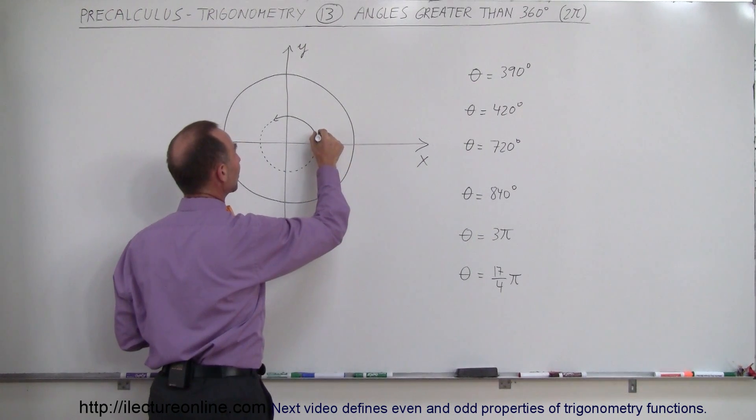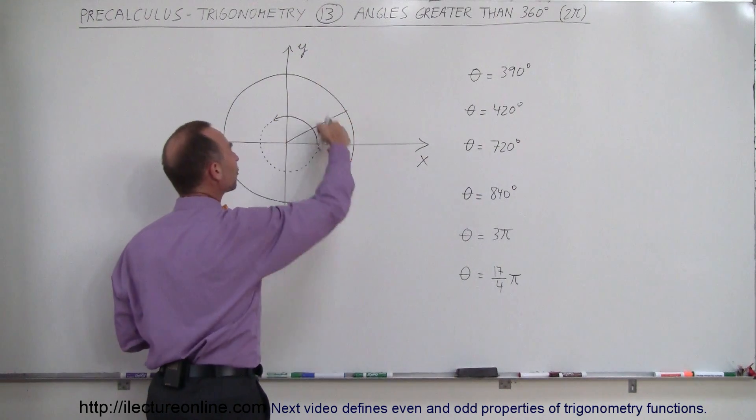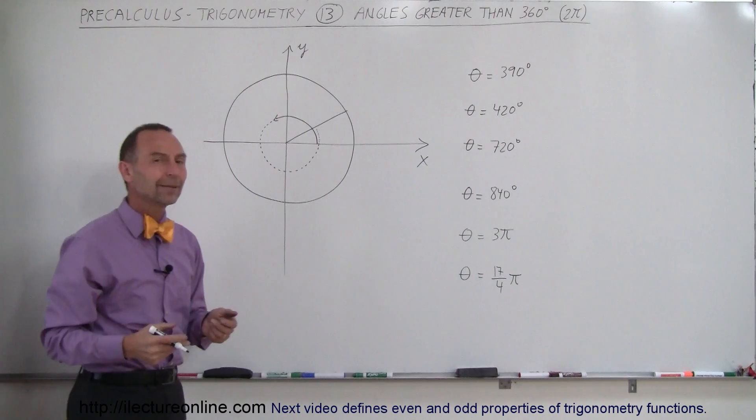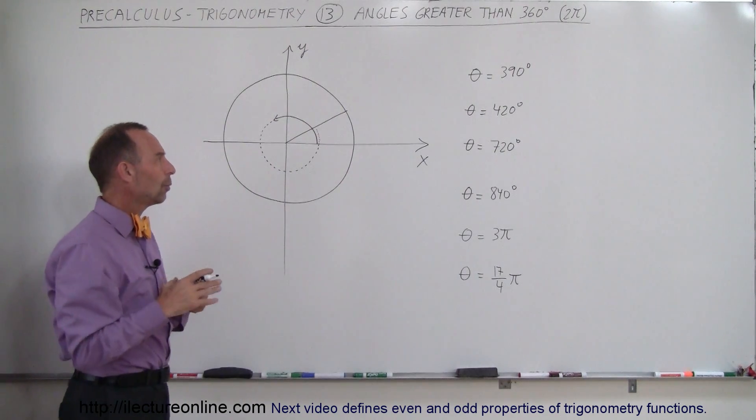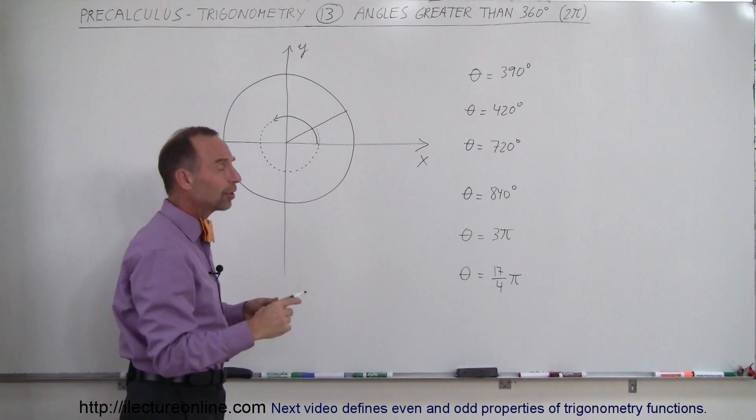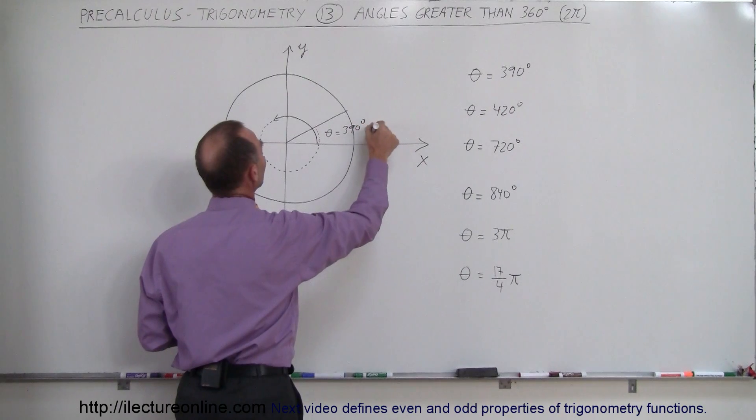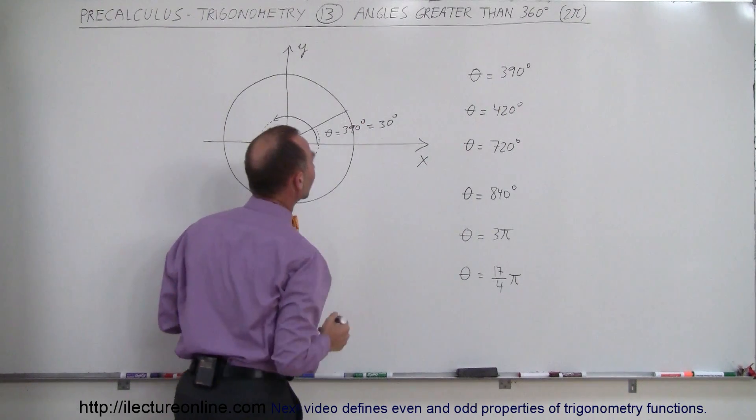We keep going: 360, 370, 380, 390, and there it is. So that is an angle of 390 degrees, but that doesn't mean much. What we can see is that we end up back in a place as if we had an angle of 30 degrees.